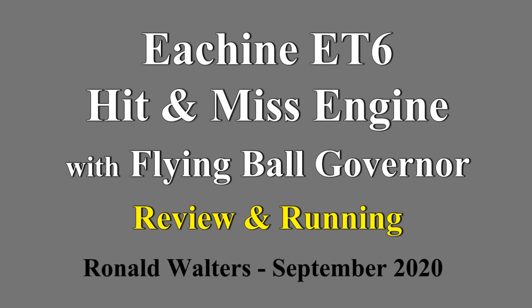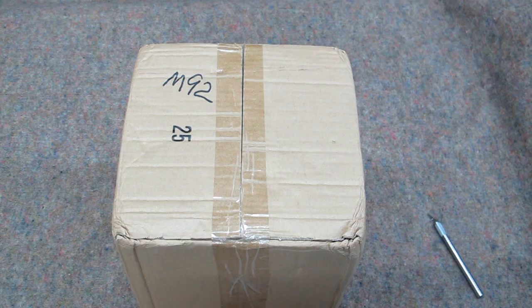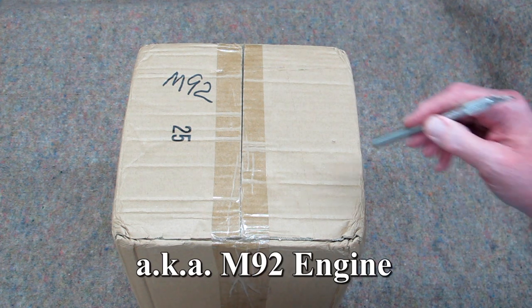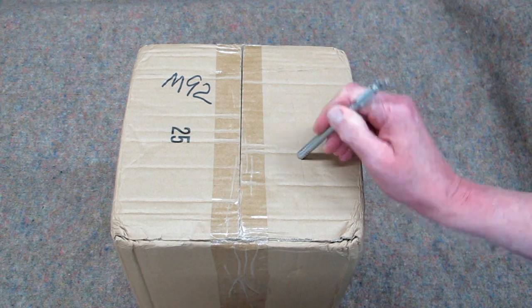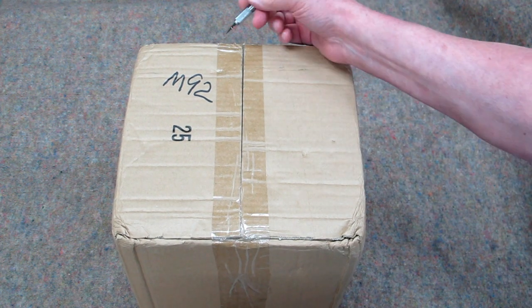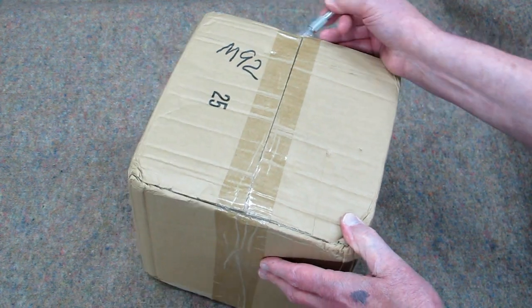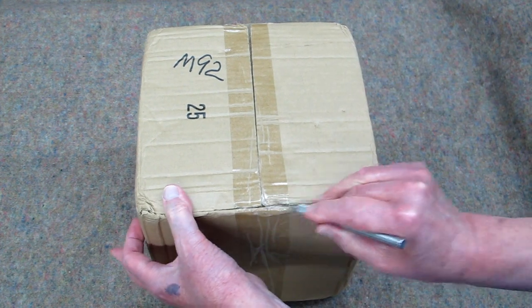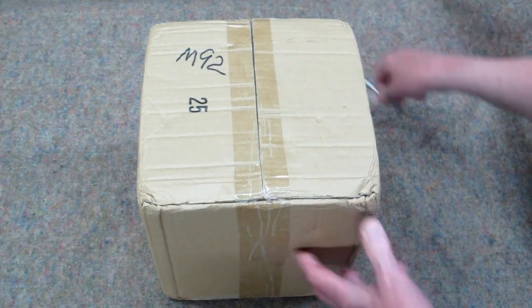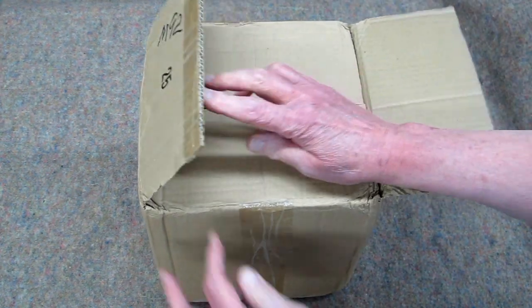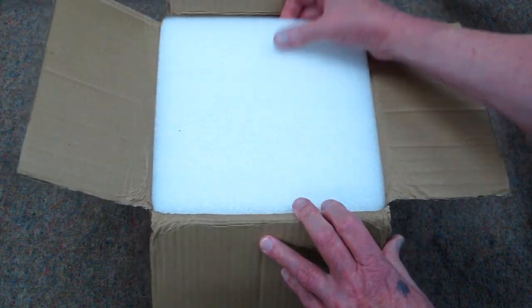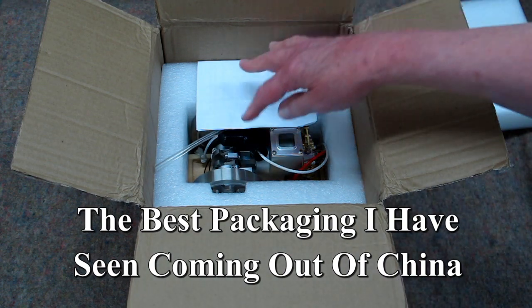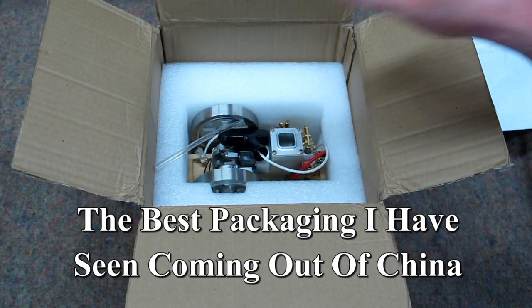This is the ET6, which is the latest version of the hit and miss engine. I keep showing the unboxing of these, not because you haven't seen a box before, but to stress how well this manufacturer packages his product. And when something is packaged this well, I want to stress the point that when you get it, it's going to be received in good condition.